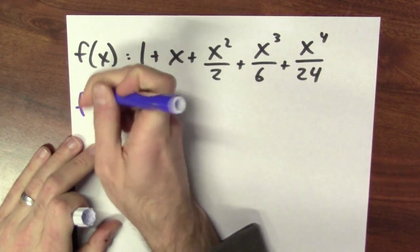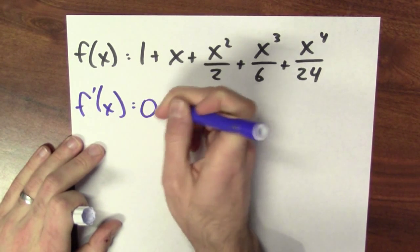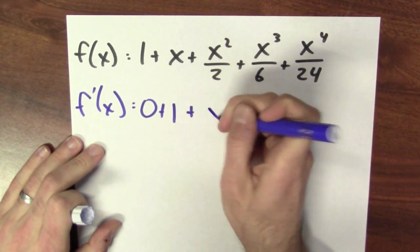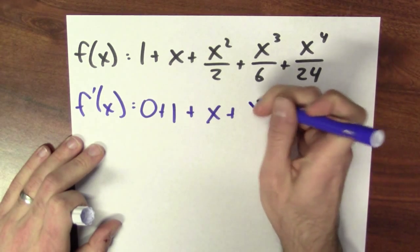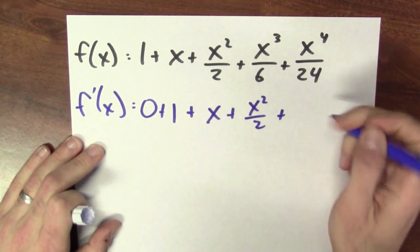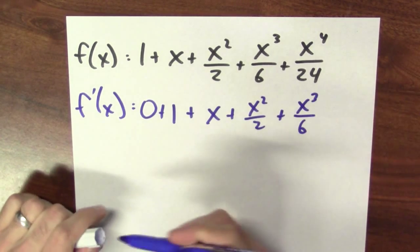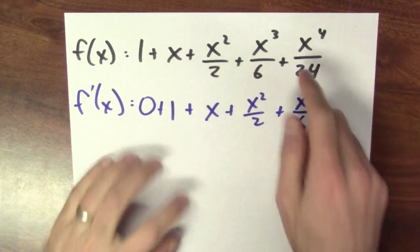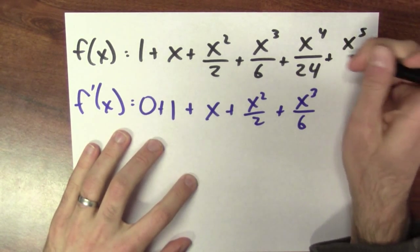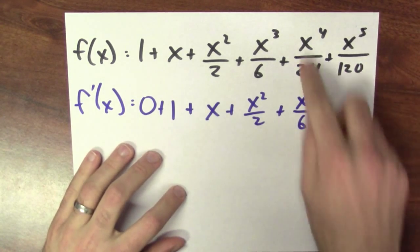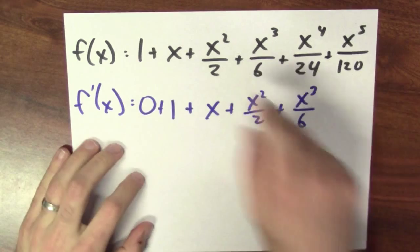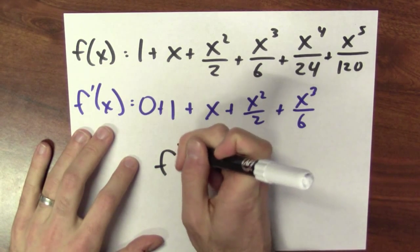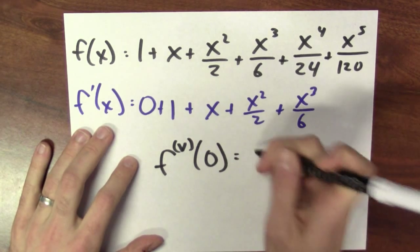If I try to differentiate this function: the derivative of 1 is 0, but the derivative of x is 1, and the derivative of x squared over 2 is x, and the derivative of x cubed over 6 is x squared over 2, and the derivative of x to the fourth over 24 is x cubed over 6. This function isn't its own derivative, but things are looking better. The fifth derivative of f must also equal f, so I'll just add on another term: x to the fifth over 120. Take the fifth derivative of this function — its value at 0 is 1.